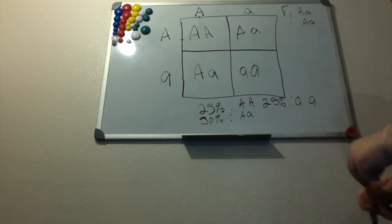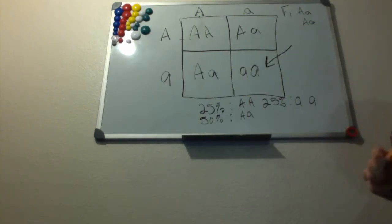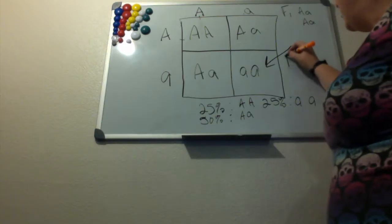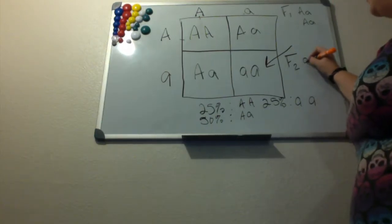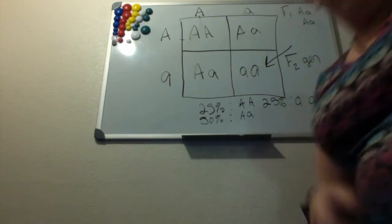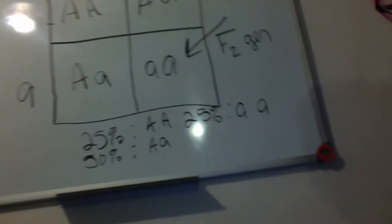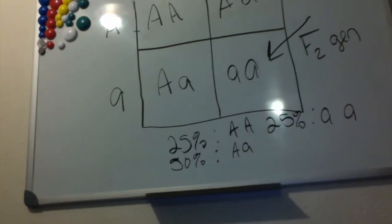This is where you can see the recessive phenotype will come back into play, and this is known as the F2 generation. I'll put this up a little closer to give you a better idea of what we're looking at.